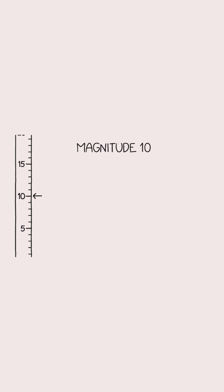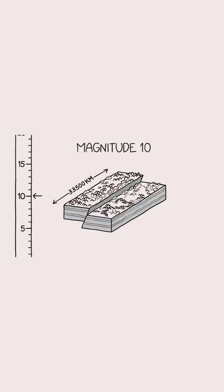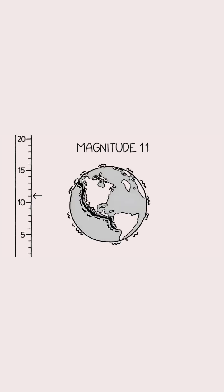In order to get to magnitude 10, you'd need a ruptured fault line 3 and a half thousand kilometers long. And a magnitude 11 quake would require a fault that went halfway around.